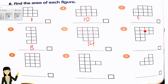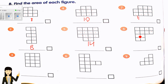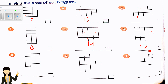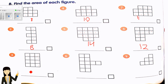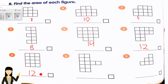For the next shape, counting gives eleven square units. Then the next shape: counting gives twelve square units. For another shape: one, two, three by one, two, three, four — three times four equals 12. Perfect.